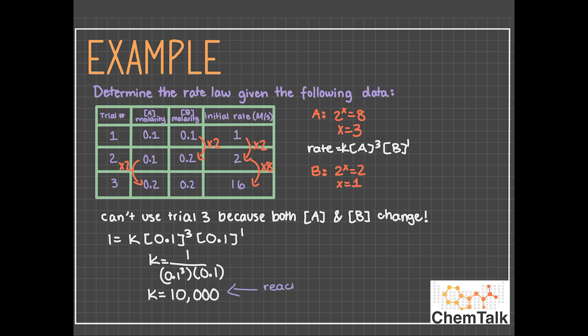Now we just need to isolate K. So you can solve this as a normal mathematical equation. You raise the concentrations to their exponents, multiply the concentrations, and then divide on both sides. So when you do this, you get K is equal to 10,000. And this tells us that the reaction rate is pretty fast, because the larger the K value, the faster the reaction rate.